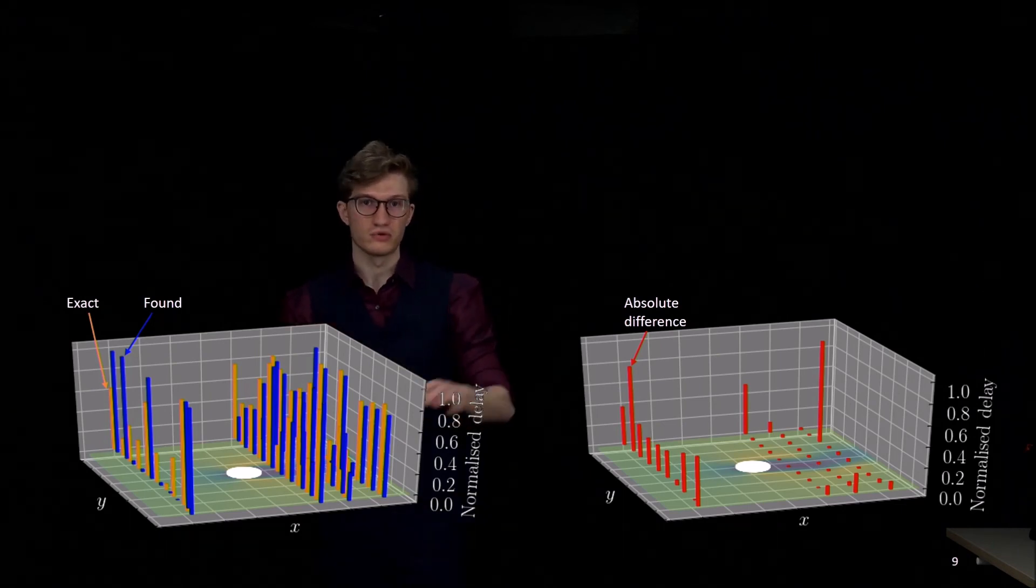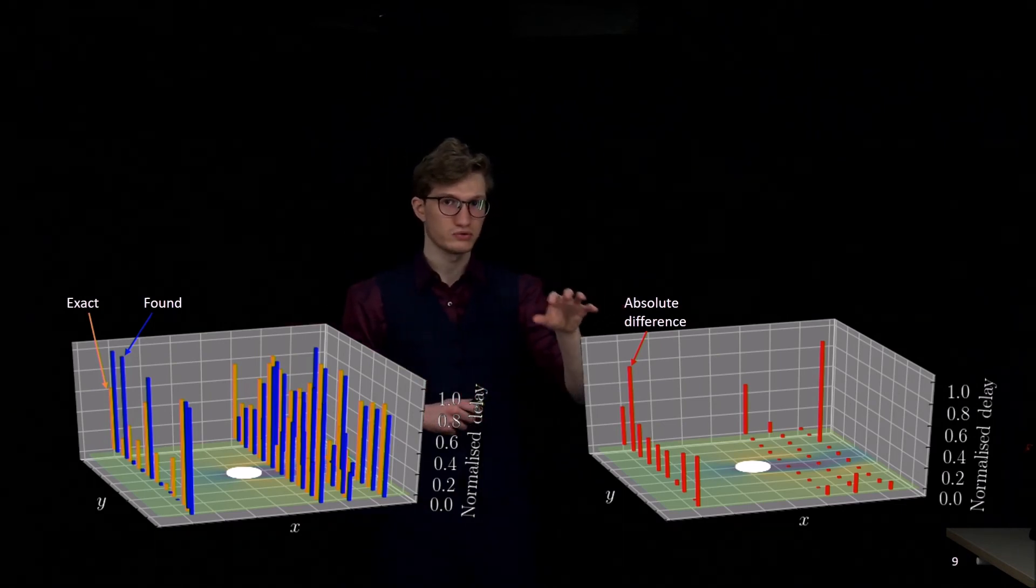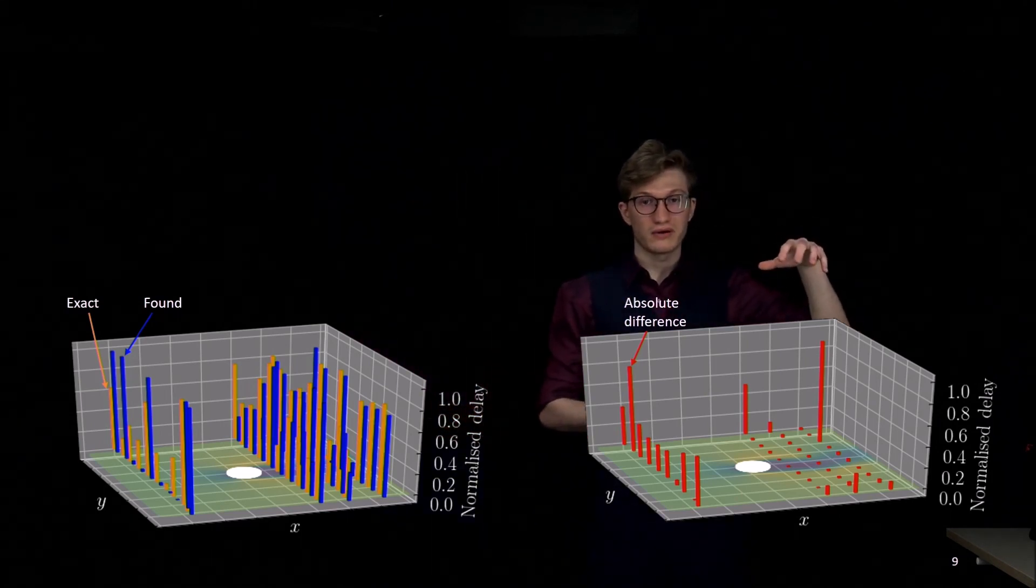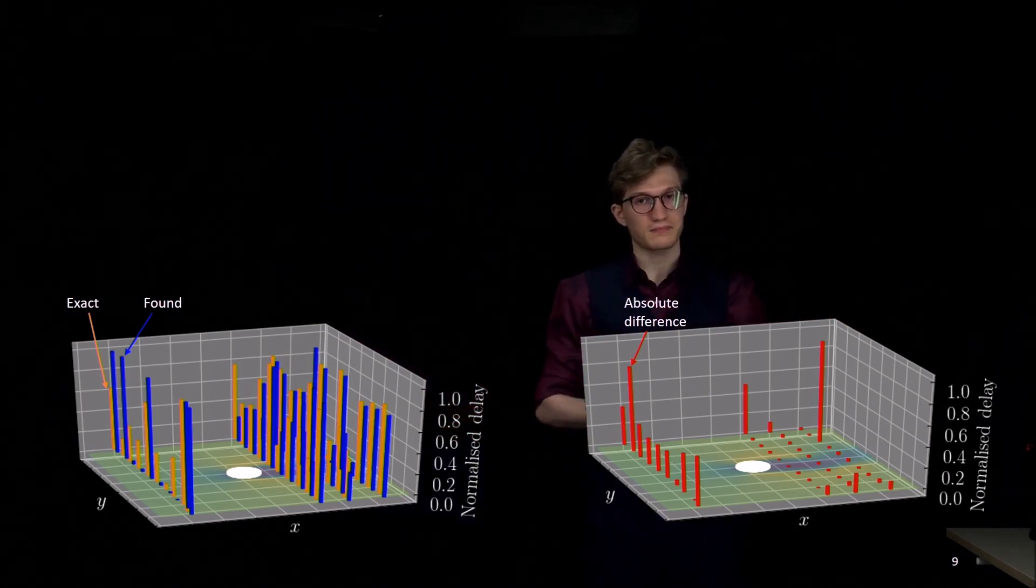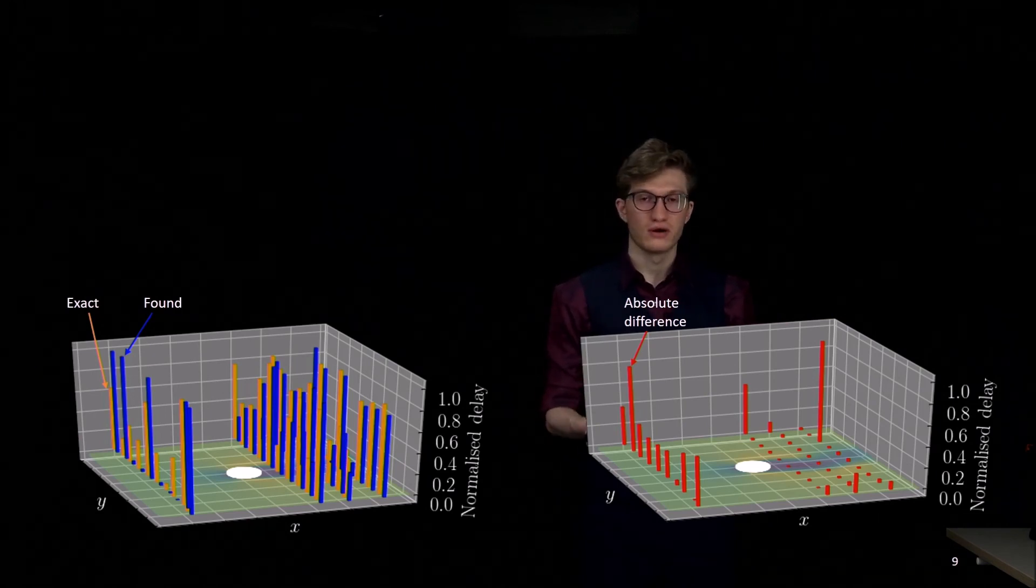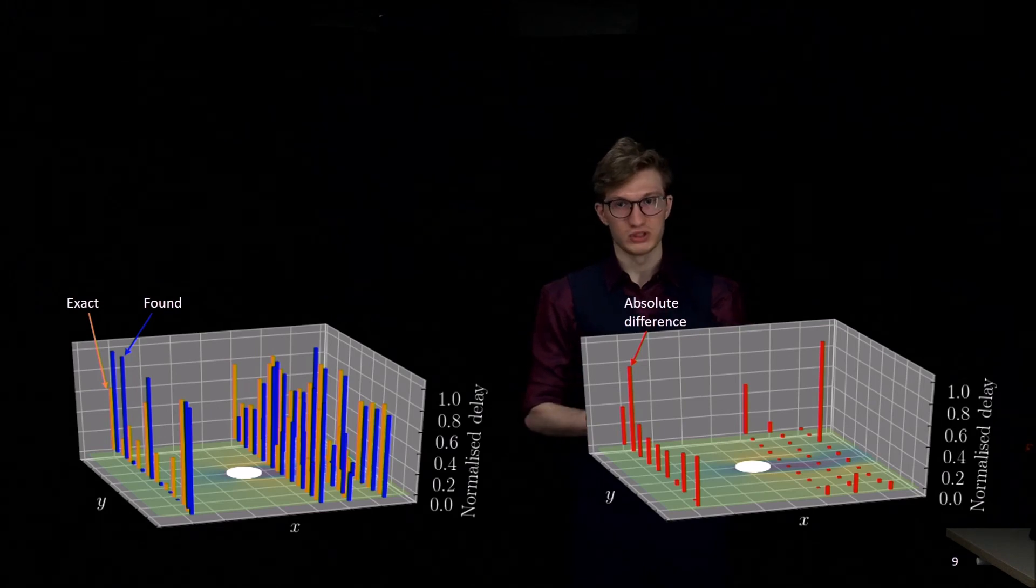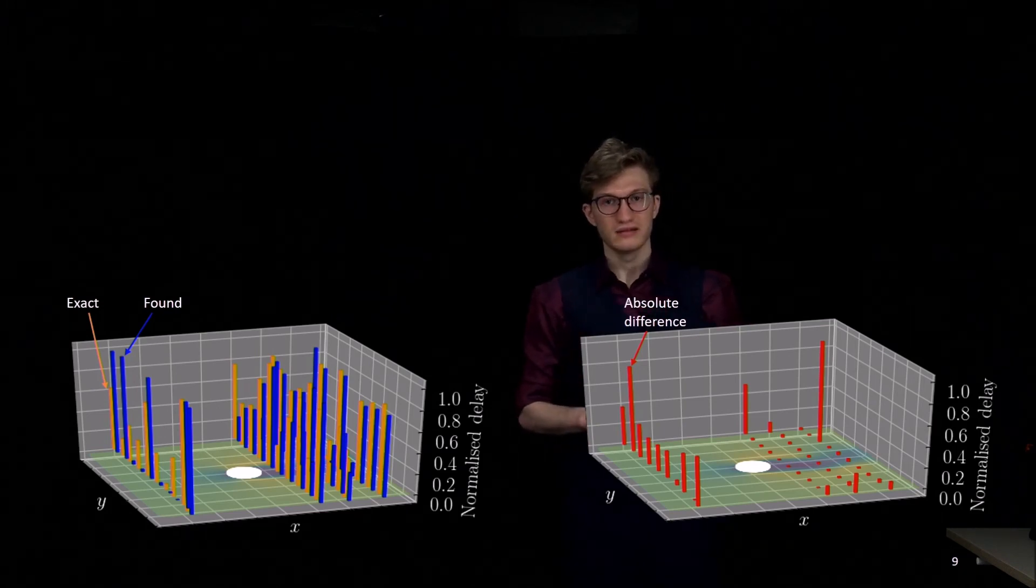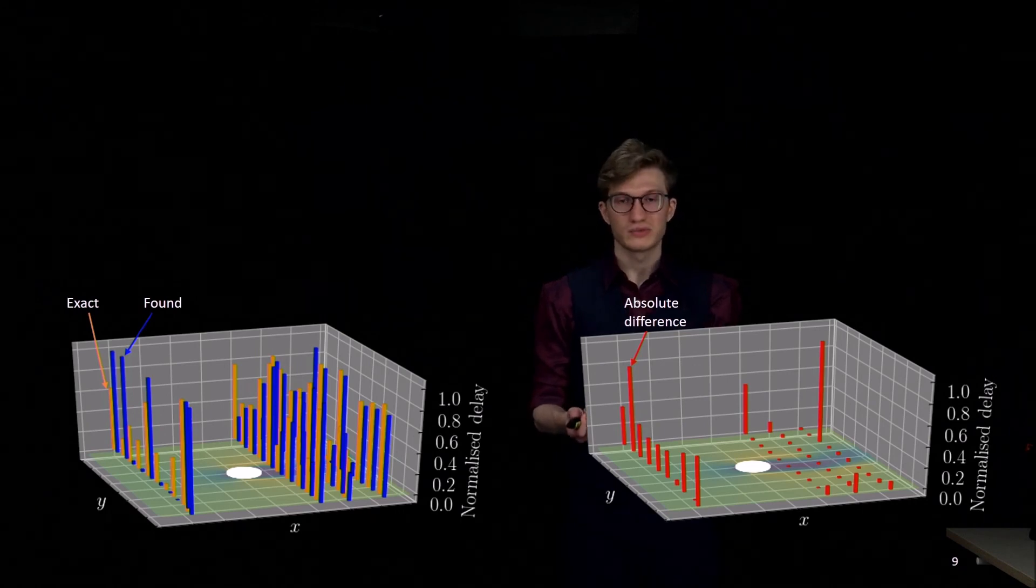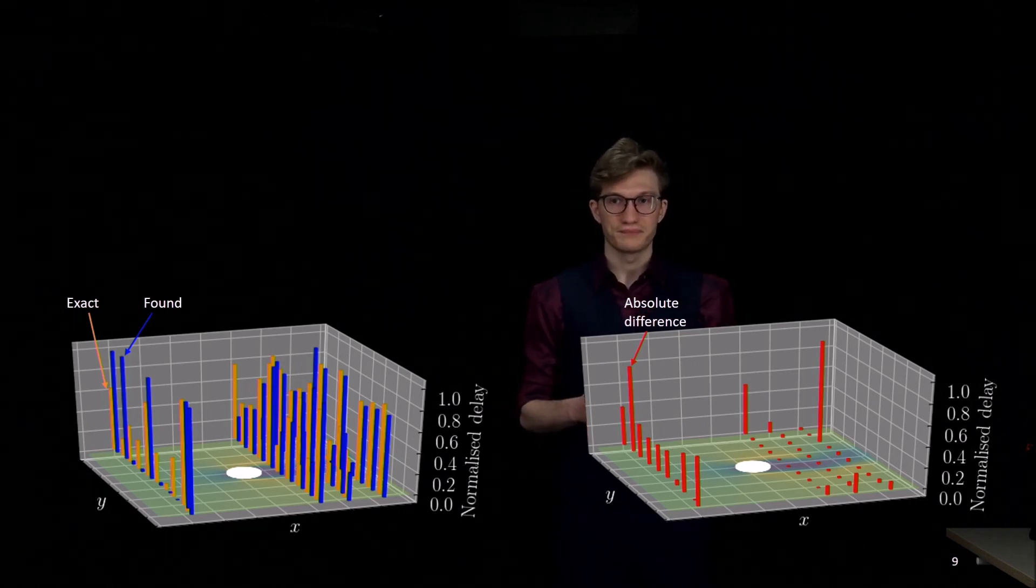To see it more clearly, we can have a look at the absolute difference at all those locations. At all the locations in the wake of the cylinder where the flow is very unsteady, the retrieved delay has an error of 1% relative error, which is very good. And there are still some locations where the delay is not well retrieved, but we can understand this because the flow is nearly steady at these locations.